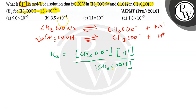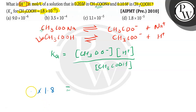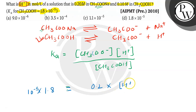Now, the concentration of CH₃COO⁻ can be taken as 0.2, since there is CH₃COO⁻ ion present. So it will be: 1.8 × 10⁻⁵ = (0.2 × [H⁺]) / 0.1. Solving this, I will get the concentration of H⁺ ion.